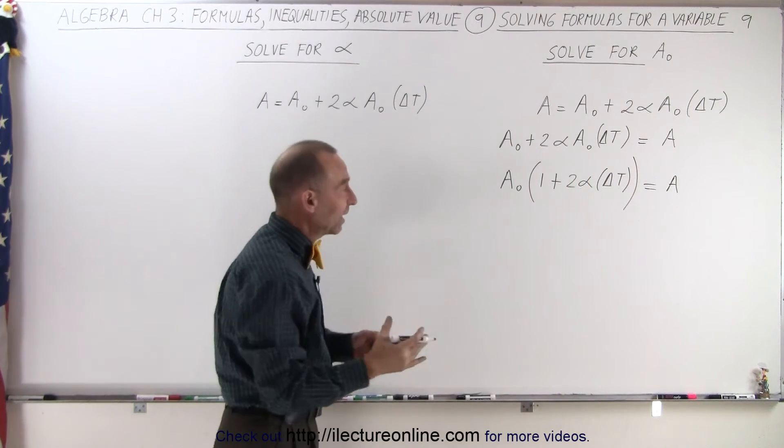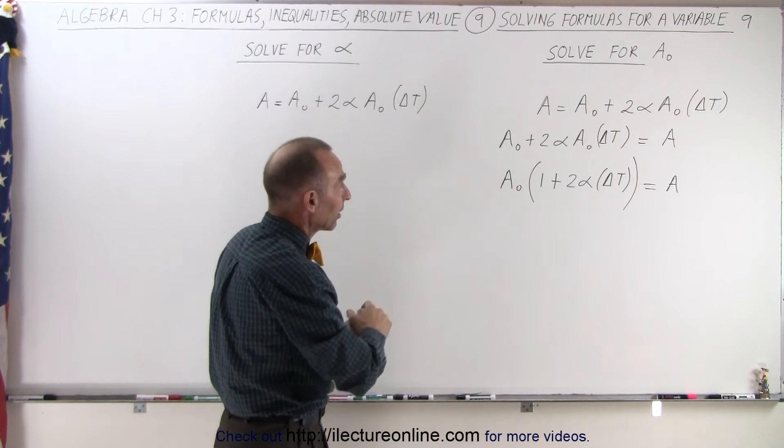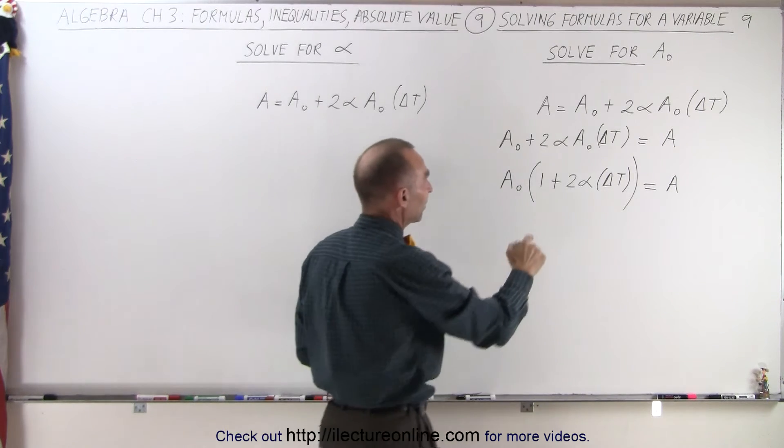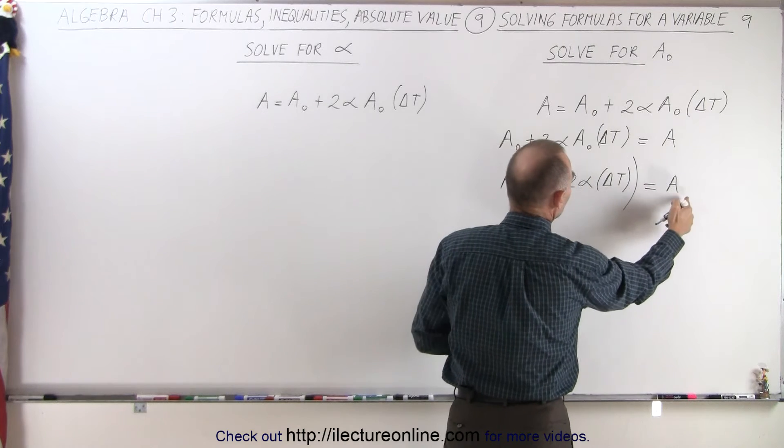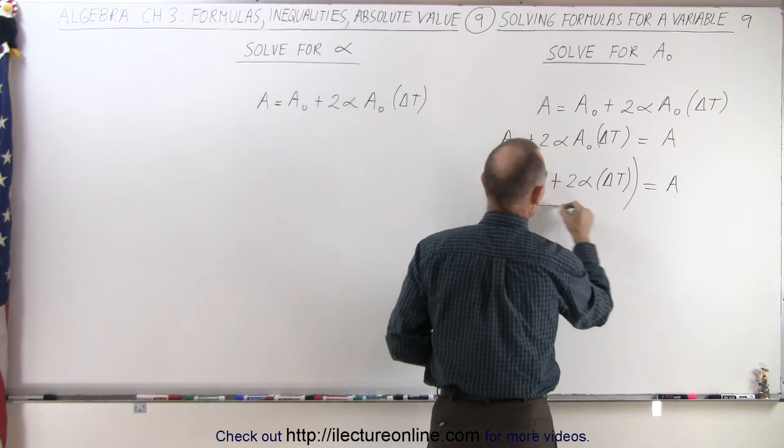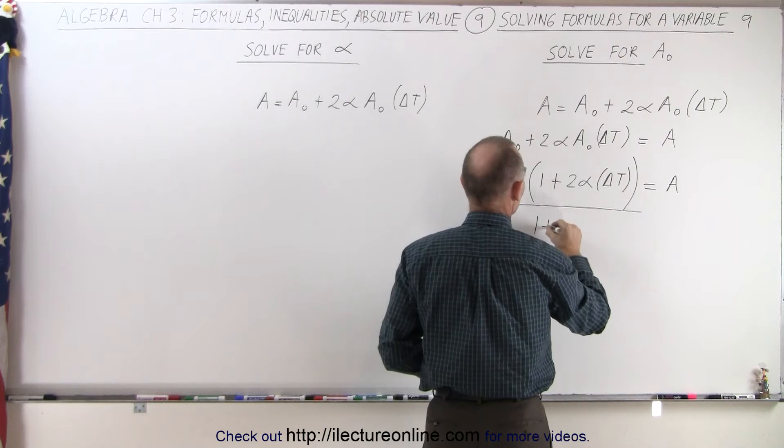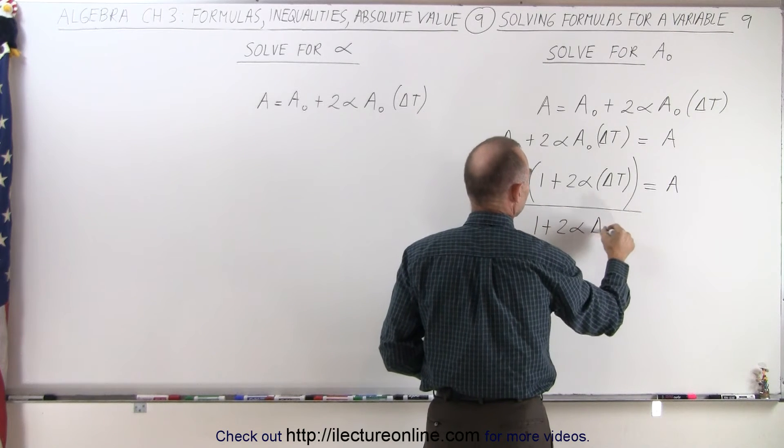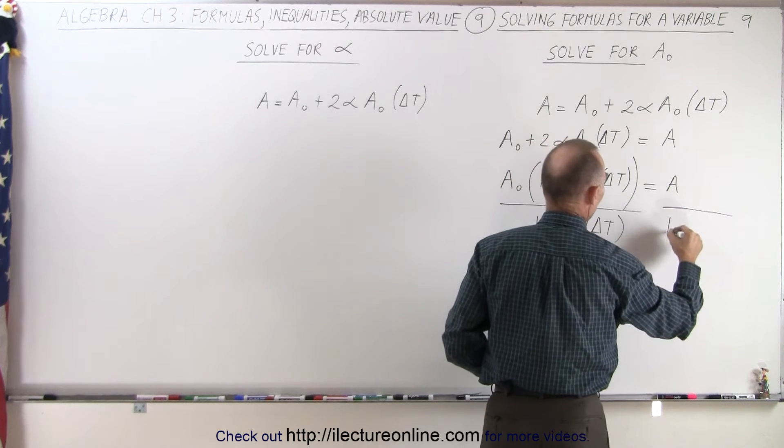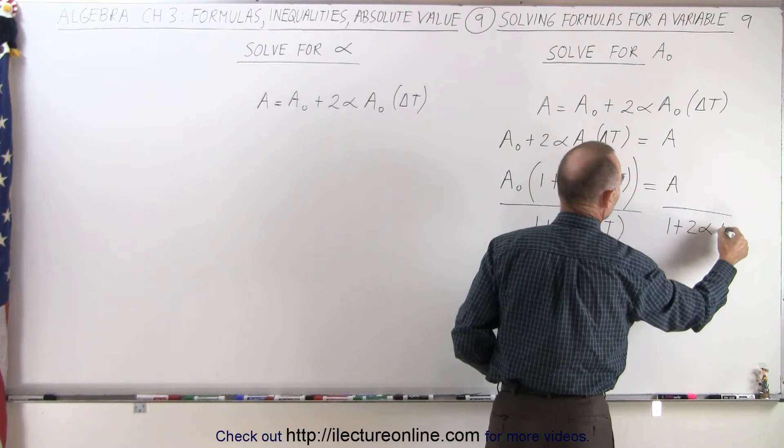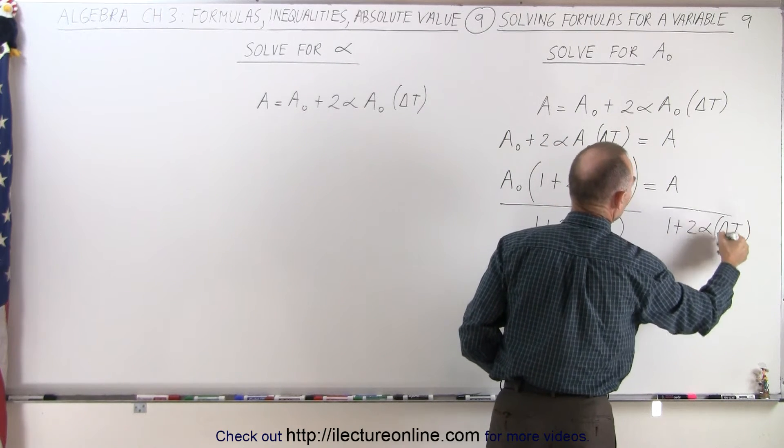And finally, since I want to isolate A sub nought on the left side, I want to divide both sides by the factor of A sub nought, which is this whole quantity in parentheses here, and so I'm going to divide both sides of the equation by 1 plus 2 alpha delta T, and on the right side, of course, also 1 plus 2 alpha times delta T.